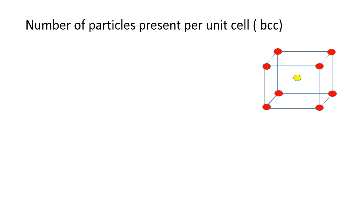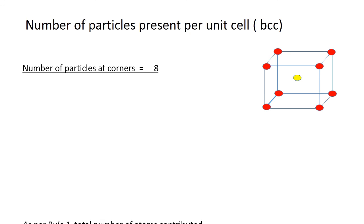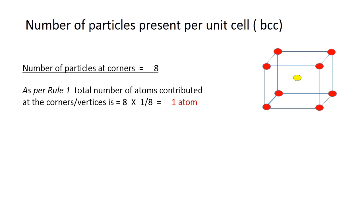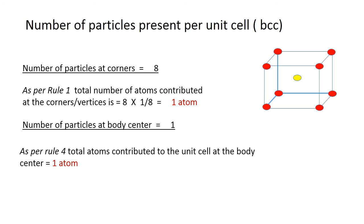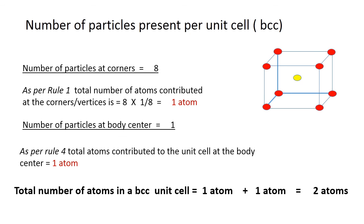Now for the BCC unit cell: the number of corners is eight, so as per rule one, the corner contribution is 8 × (1/8) = 1 atom. There is also one particle at the body center, which as per rule four contributes 1 atom. Therefore, the total number of atoms in a BCC unit cell is 1 + 1 = 2 atoms.